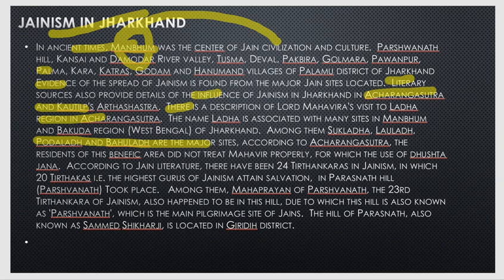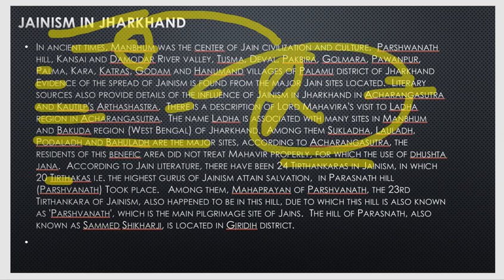There are 24 Tirthankaras in Jainism. The highest group in Jainism consists of these 24 Tirthankaras. Parsnath is the main place for Jainism, and a collection related to Hamas and this postage is associated with it.